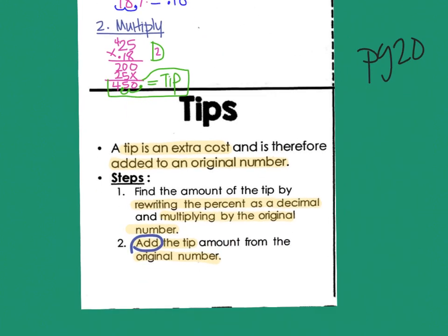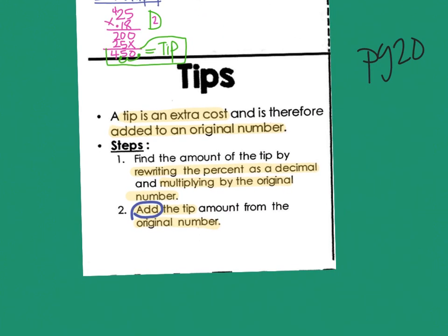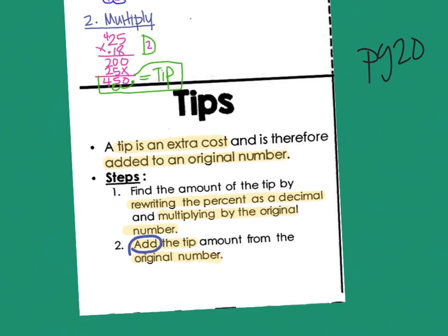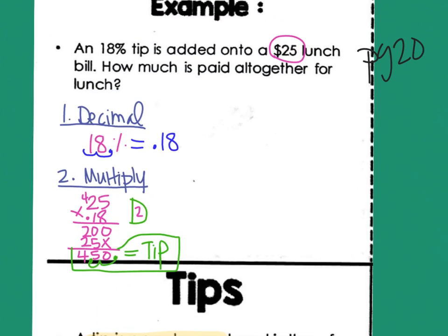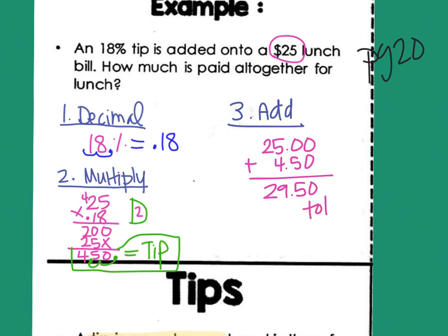But my last step says add the tip to the original number. So the last step, step three, is going to be add. $25, I'm going to make that be a decimal, 25.00, and then add the tip, which was $4.50. All together, that makes $29.50 for the total amount paid all together.